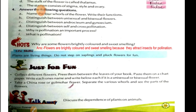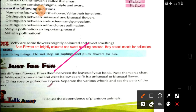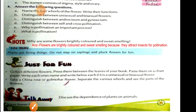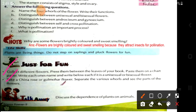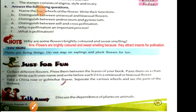Observe the given practical work and read carefully — it is a very helpful practical activity. Also, discuss the dependence of plants on animals: without plants, animals will not survive. Without plants, a better life is not possible. Plants give us oxygen, and animals release carbon dioxide, which is necessary for plants.